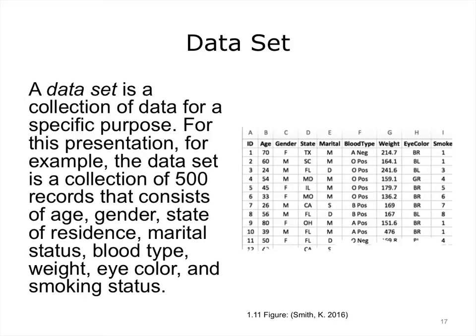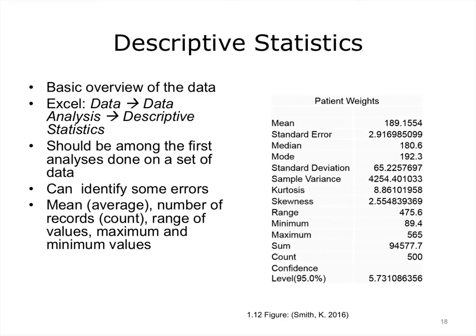A dataset is a collection of data for a specific purpose. For this presentation, for example, the dataset is a collection of 500 records consisting of age, gender, state of residence, marital status, blood type, weight, eye color, and smoking status. Descriptive statistics give basic statistics of numeric data and should be one of the first analyses run on a dataset. Descriptive statistics can identify some errors — for example, does the count of the number of records (500) match what was expected? Do the minimum and maximum values look reasonable for the range of patient weights? Does the mean — the average — look reasonable?